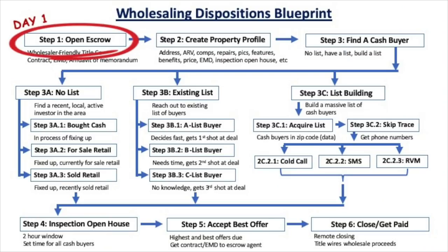Assuming you have a contract with a motivated seller on day one, the very first thing you need to do is open escrow with a wholesaler-friendly title company. Open escrow means the title company is going to do a title search and prepare for a closing. This is really important to do right away in case there are issues with the property — maybe the seller isn't the actual owner, or there are liens, back taxes, or other issues. You want to find that out sooner than later.